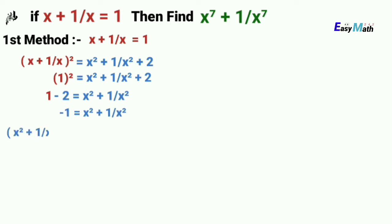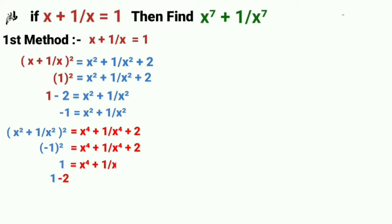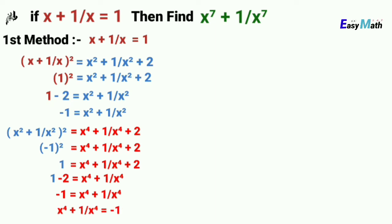Now taking the square of x squared plus 1 over x squared, we have x to the power 4 plus 1 over x to the power 4 plus 2. Using the previous result that x squared plus 1 over x squared equals minus 1, after simplifying, x to the power 4 plus 1 over x to the power 4 equals minus 1.